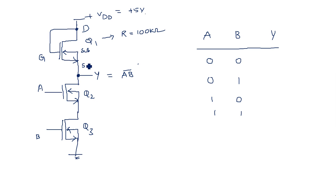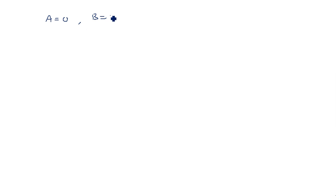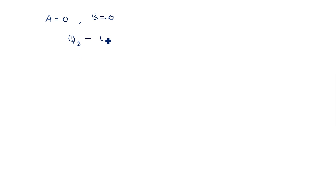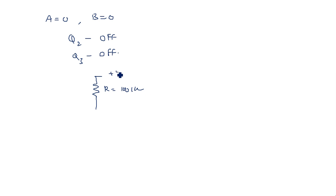There is no specific on/off condition for Q1 since it is not dependent on any input. The resistance of 100 kilo ohms exists because of Q1. The on and off conditions of Q2 and Q3 determine whether there is a short circuit or open circuit and thus determine the output. When A equals 0 and B equals 0: Q2 and Q3 are both OFF.